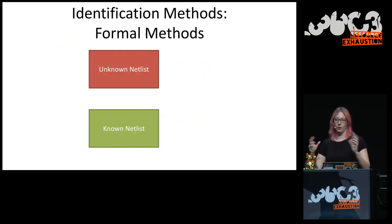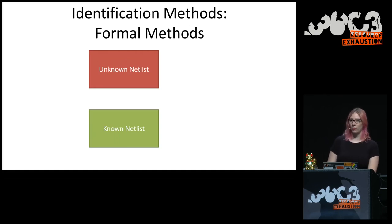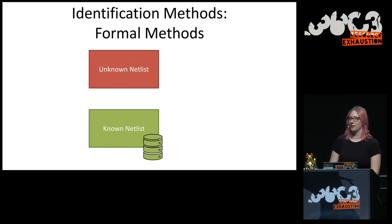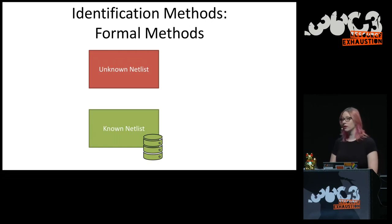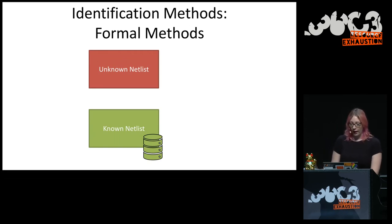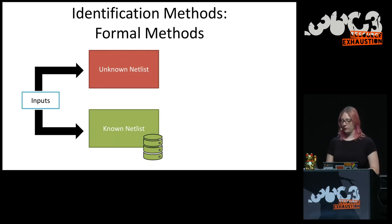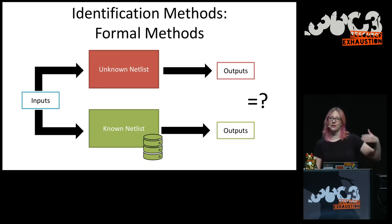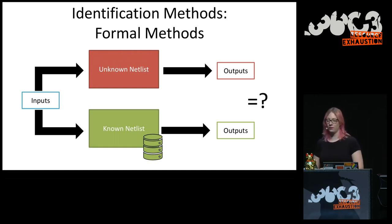The second part: now we have our module and want to know what it is. We usually do comparison — hopefully we have a database with all known designs. We compare our unknown design to a known design in this database. That might be a DesignWare library, OpenCores, or LibreCores, or some IP you have access to as a company. The idea is: I've got an unknown netlist, is it the same as a known one? We get all the inputs, connect them together, get the outputs, and see if they're the same. If for every single input the output is exactly the same, it's probably functionally the same thing.